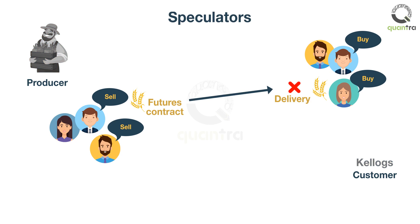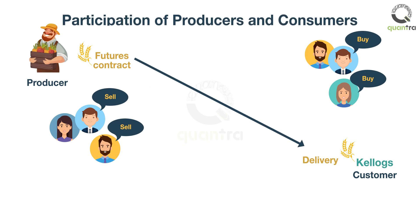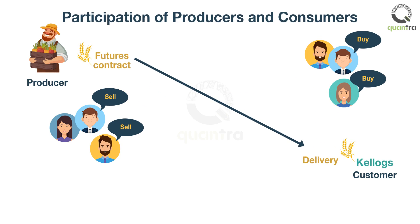Throughout this course, we will assume that this is the label that applies to you. The continued participation of the actual producers and consumers of the underlying assets, such as wheat, remains vital. Their participation and the possibility of making or taking delivery ensures that the price remains efficient, and is not simply subject to gambling.